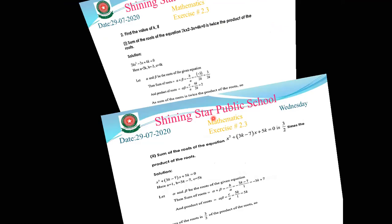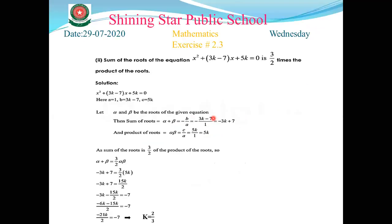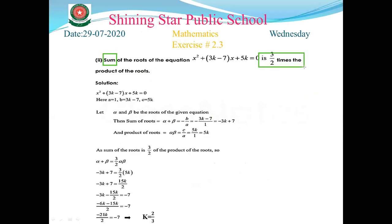Part number two: the sum of the roots of the equation is 3/2 times the product. The condition here is that the sum of the roots is 3/2 times the product of the roots.